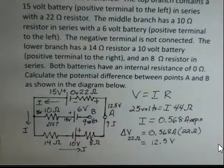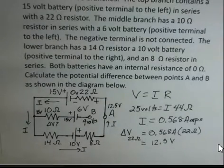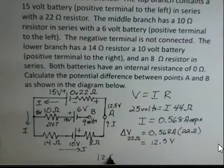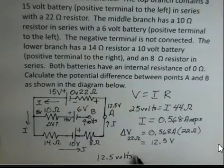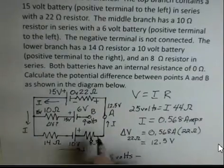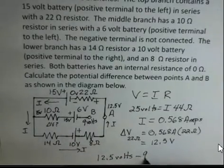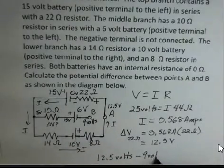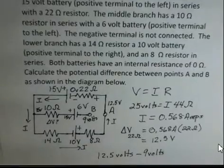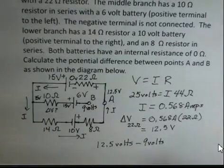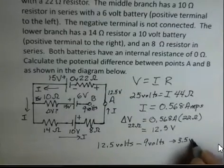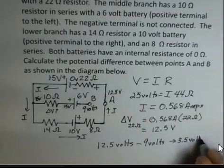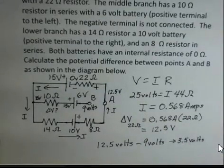So what is the potential difference between point A and point B? Point A is at 12.5 volts and point B is at positive 9 volts. You don't even need a calculator for this — it's 3.5 volts. That is the potential difference between point A and point B.